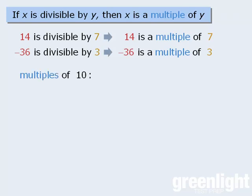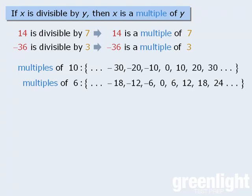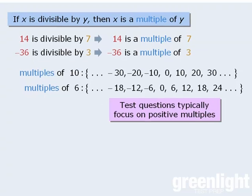To expand on this, we can say that the multiples of 10 are as follows. Similarly, we can say that the multiples of 6 are shown here. Now, although these multiples include negative values, as well as 0, you'll find that the test typically focuses on positive multiples.